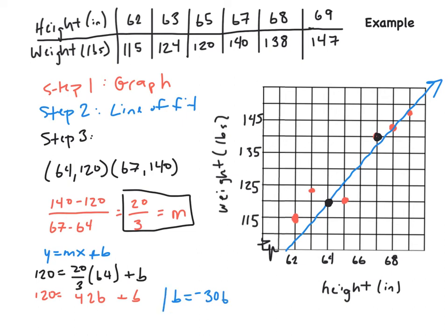Now, we have our m. We have our b. So, once we solve this, put this in y equals mx plus b form. We have y is equal to 20 over 3 x minus 306. This would be our final answer.